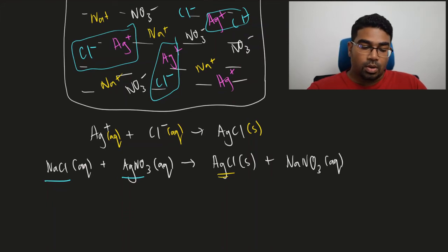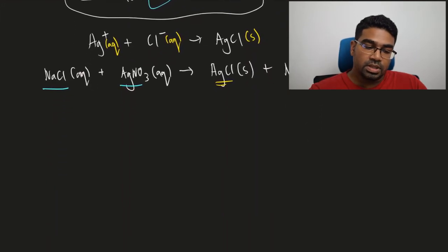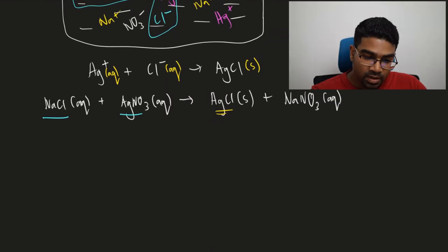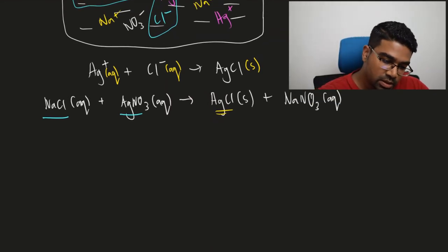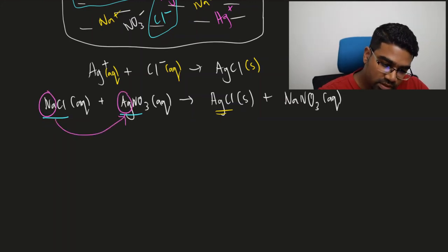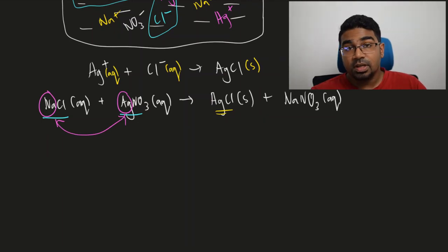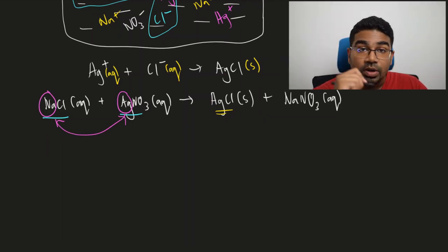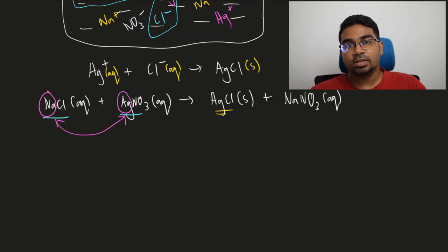Now here's a trick to easily work out this equation: in precipitation reactions, all you have to do is take the cations and swap their places. So silver goes to chloride and sodium comes to nitrate — and those are the two products of the precipitation or double decomposition reaction.